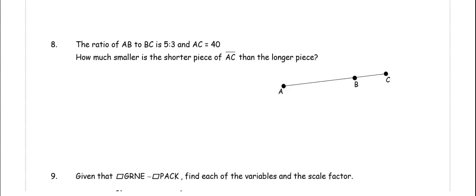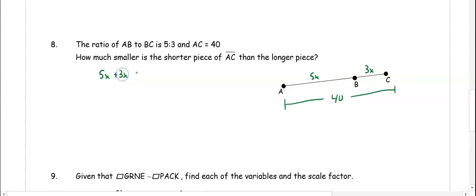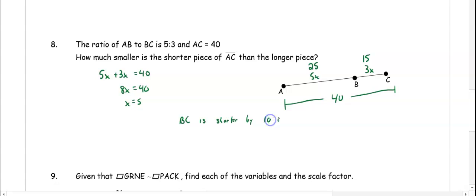In number eight, the ratio of AB to BC is 5 to 3, and AC is 40. So AB is going to be 5x and BC is going to be 3x. We figure out x by adding the two pieces to equal the whole: 8x equals 40, so x equals 5. That means the longer piece AB is 25 and the shorter piece BC is 15. So BC is shorter by 10 units.